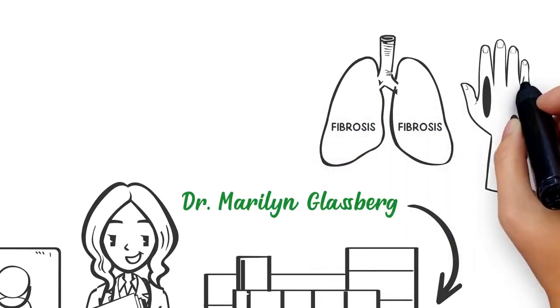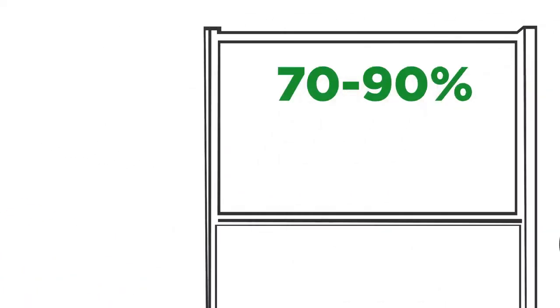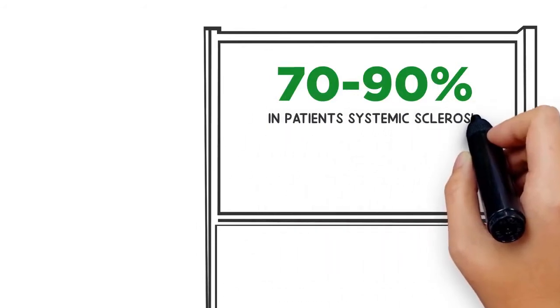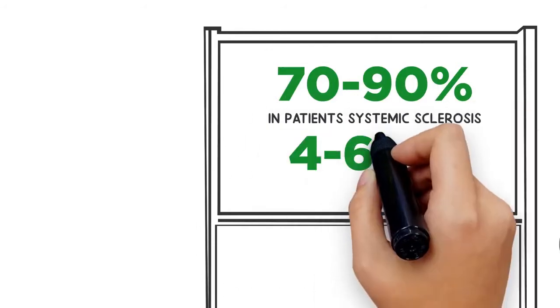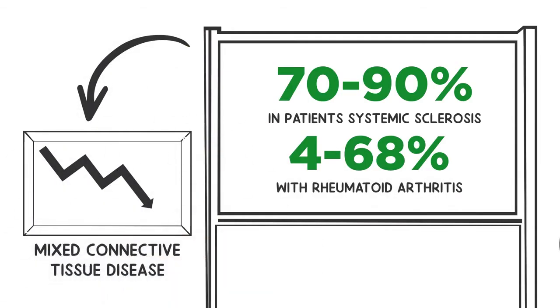Interstitial lung disease in connective tissue disease is very common but unpredictable. The prevalence of ILD varies greatly from 70 to 90 percent in patients with systemic sclerosis to 4 to 68 percent with rheumatoid arthritis and down to mixed connective tissue disease.